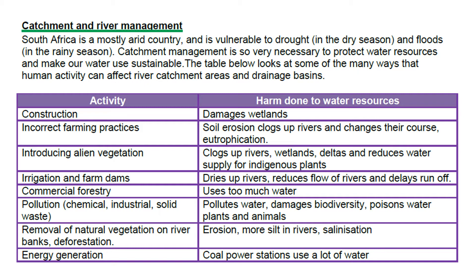If we look at this table, these are some of the human activities that have a negative effect on our water resources. Construction, if it's done in an irresponsible way, could damage wetlands. It creates artificial surfaces which allow for more runoff, which then potentially can cause flooding.